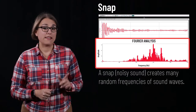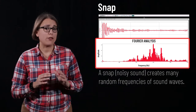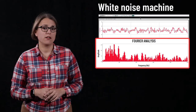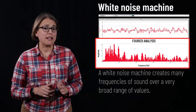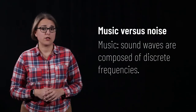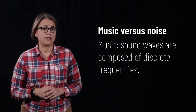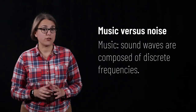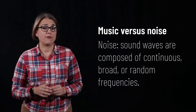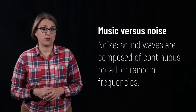Next, let's look at a noisy sound — a snap. This sound creates many frequencies of sound waves, making a rather random-looking Fourier analysis graph with no clear pattern to the frequencies. Finally, let's look at the Fourier analysis of a white noise machine. This machine creates many frequencies of sound, producing a very broad spectrum of frequencies. Generally speaking, musical sounds such as the tuning fork and piano consist of just a few frequencies — a discrete Fourier analysis. Sounds we consider noise have very continuous, broad, or random frequency distributions.